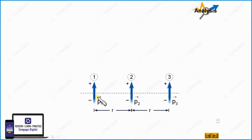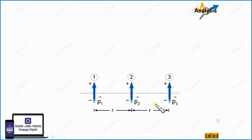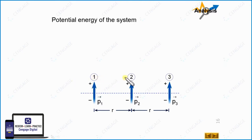We have written dipole moment vectors P1, P2, P3 for dipoles 1, 2, and 3. It should be noted that P1 vector equals P2 vector equals P3 vector, because we have identical dipoles. The separation between adjacent dipoles is r and r. If we take the three dipoles as a system, we will have three pairs.